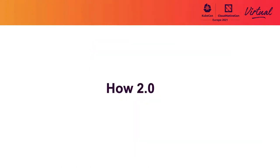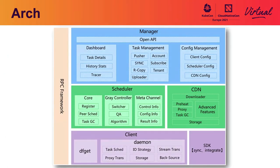That explains why we decided to initiate Dragonfly V2 and its innovations. The module structure of Dragonfly V2 mainly includes manager, scheduler, CDN system, client, SDK, and a unified RPC framework. The manager is the central controller, providing a dashboard, task management, configuration management, and a RESTful API. The scheduler is responsible for scheduling peers and acting as a metadata store. CDN is responsible for backing the seeder and caching files. The client handles uploading and downloading files and is integrated by other third-party tools through the SDK. Each subsystem communicates through the RPC framework.